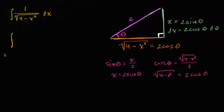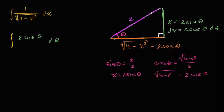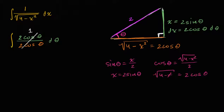Now let's evaluate the integral using this substitution. dx equals two cosine theta dθ, and the denominator is two cosine theta. So we get two cosine theta over two cosine theta — that's just one. This simplifies to the integral of dθ, which is just theta plus C.